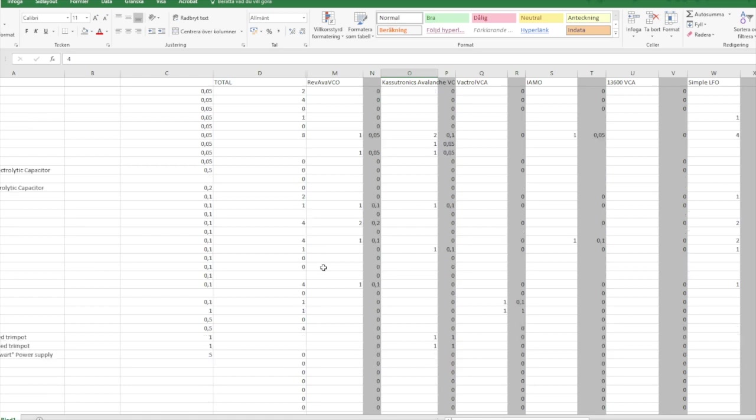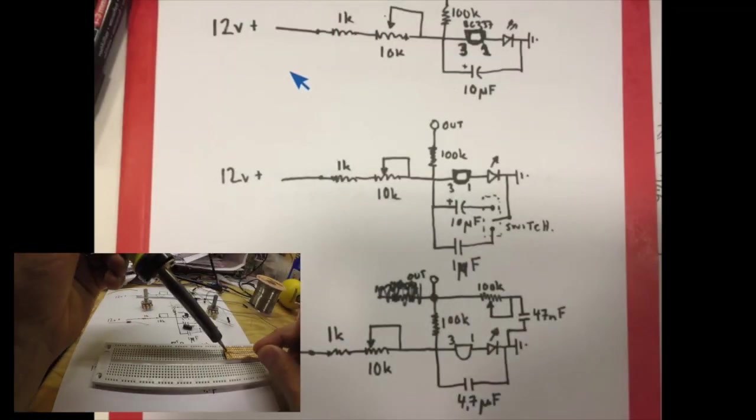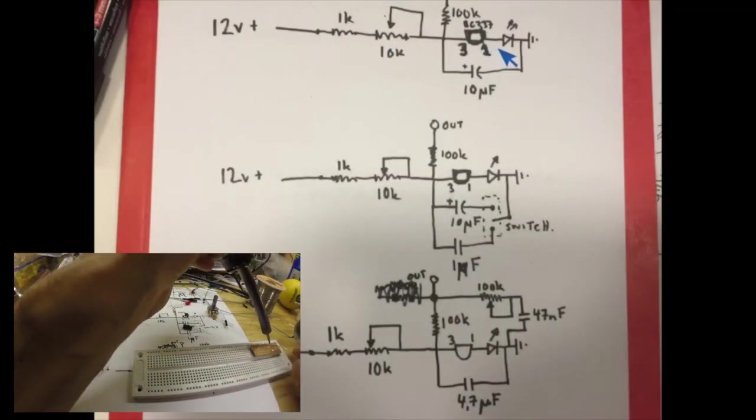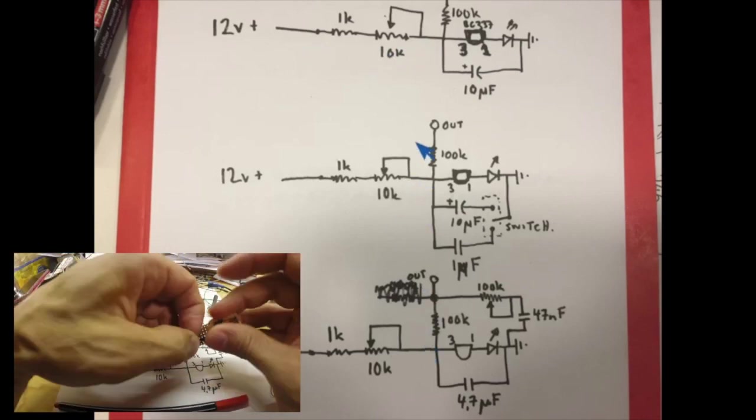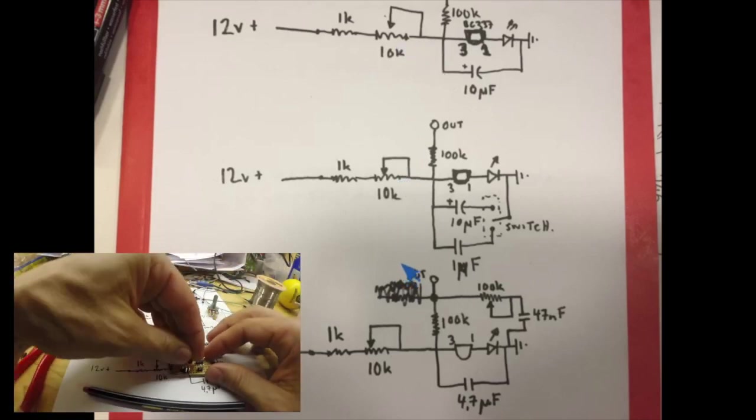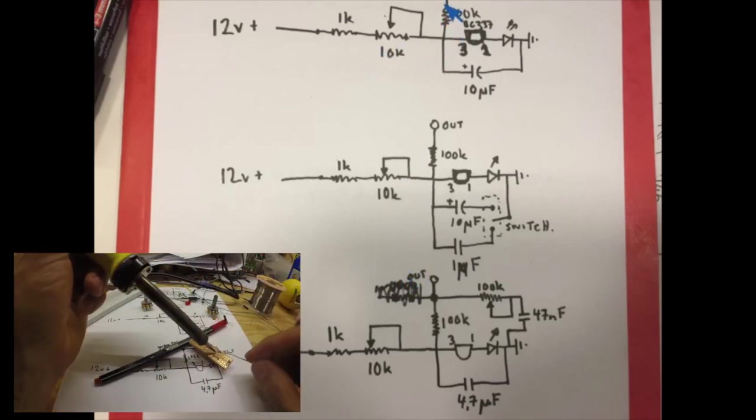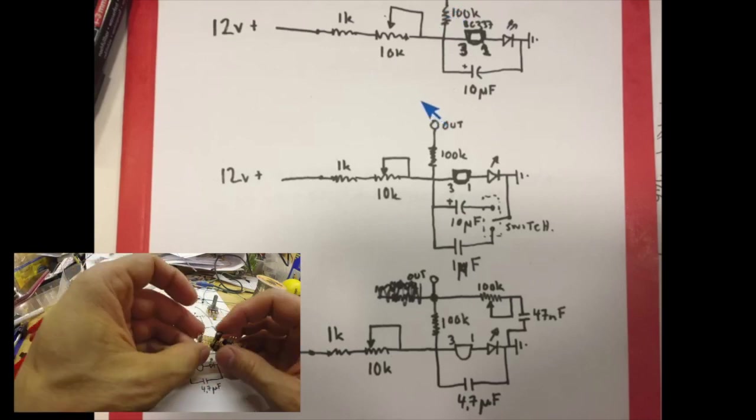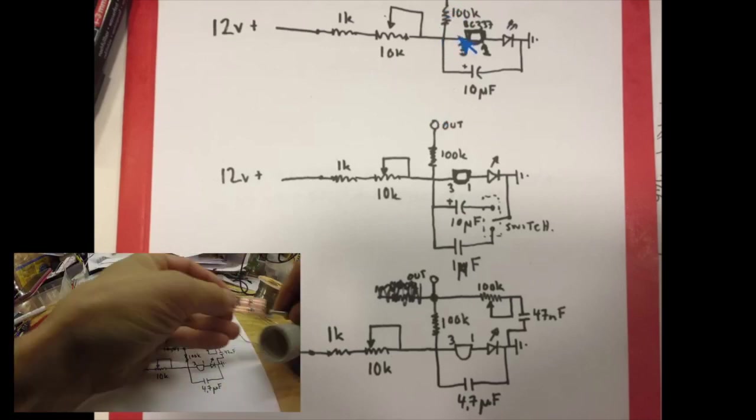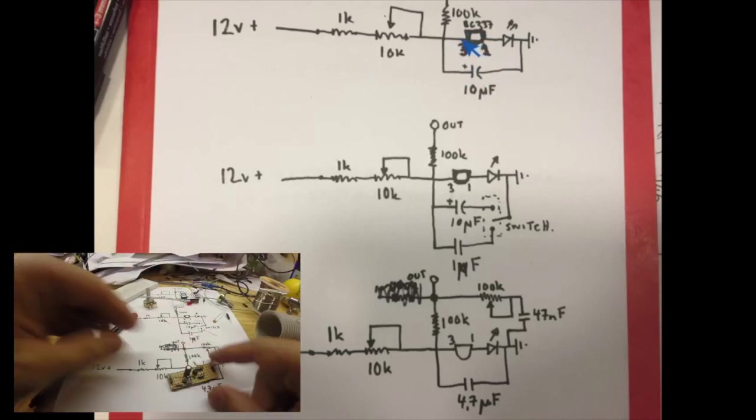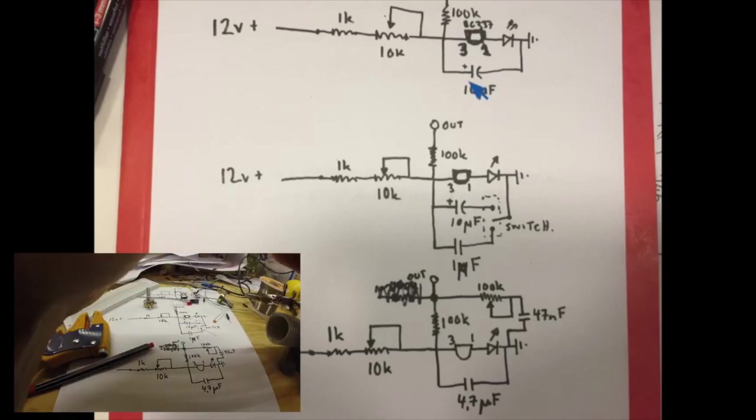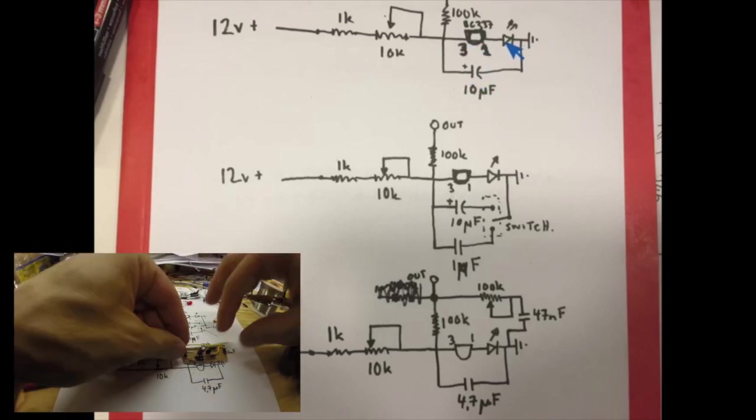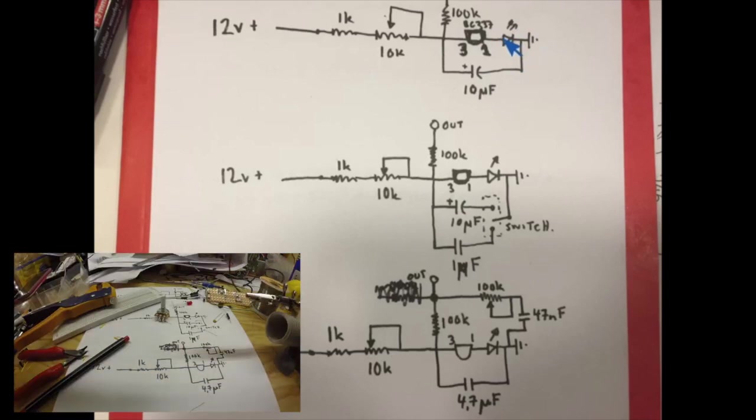So let's look at some schematics and building it. If we begin with the design by Look Mom No Computer. He actually did three different ones or he suggested three different ones. And here I missed output. There's an output up there. So the oscillator core is the transistor with a capacitor. And he also had added an LED for visual effect.